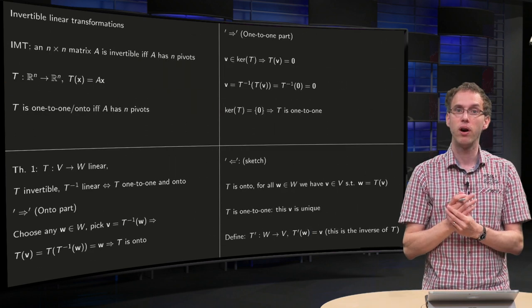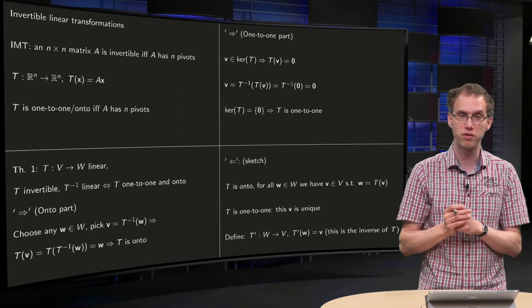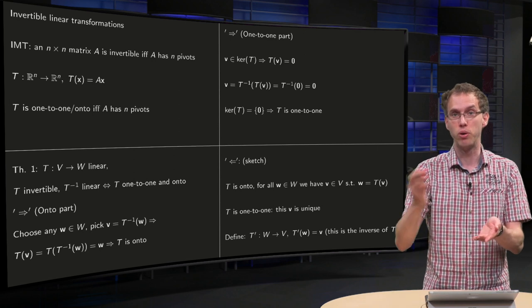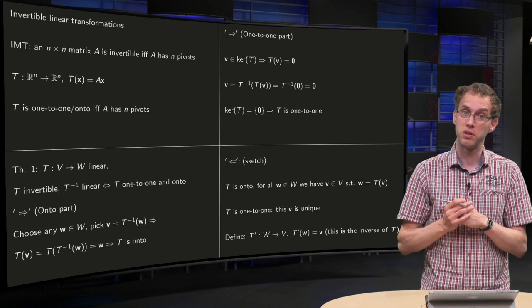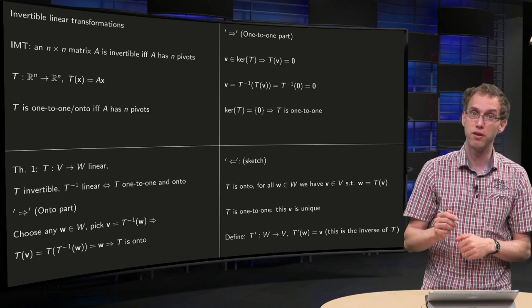So if your transformation T is onto and one-to-one, you know your T is invertible. Construct the inverse as follows.